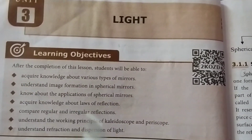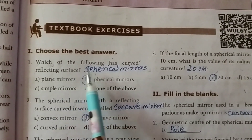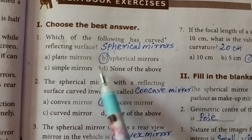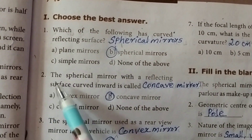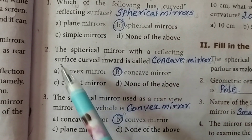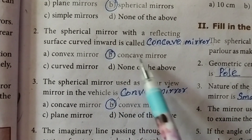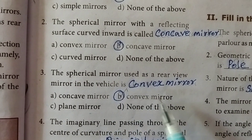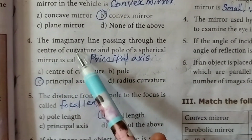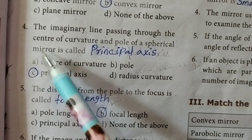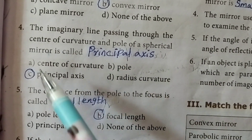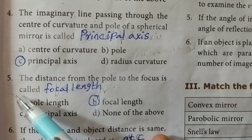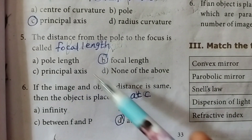Unit 3 Light book pack answers, page number 33. Choose the best answer. First one: which of the following has a curved reflecting surface? The answer is B, spherical mirrors. Second one: the spherical mirror with a reflecting surface curved inwards is called a concave mirror. Third one: the spherical mirror used as a rear view mirror in a vehicle is a convex mirror. Fourth one: the imaginary line passing through the center of curvature and pole of a spherical mirror is called the principal axis, answer is C.